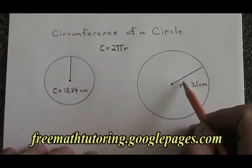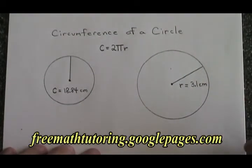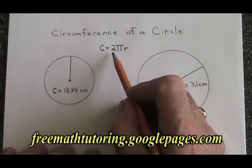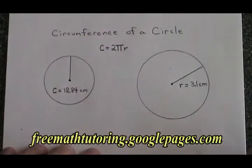In this circle on the right, we know the radius is 3.1 centimeters. We would like to use this formula to calculate the circumference.